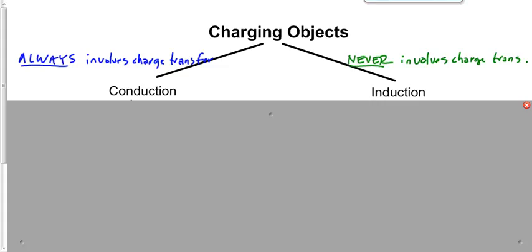Conduction usually, although not always, involves touching. Charges often transfer because two conducting objects touch each other and electrons move physically from one conductor to the other through the path formed when they touch. There are situations where conduction takes place without the objects touching — like lightning, where the cloud and the ground aren't touching, but they're close enough for electrons to arc from the cloud to the ground. So lightning is conduction.